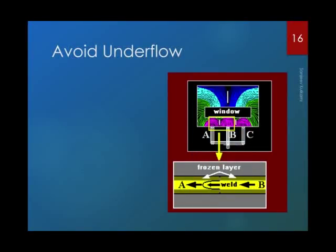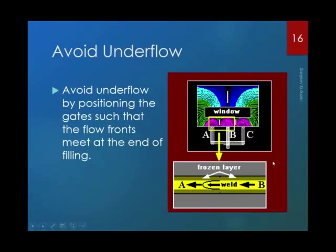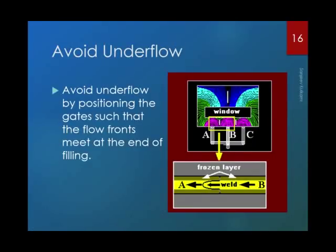Avoid underflow: one tends to provide more gates for large parts. If the mold designer considers gates A, B, and C for a component, and gates A and C are more dominant than B, then on the part surface you will not see any weld line. However, the welding of the melt occurs at the core in a non-straight shape, weakening the complete structure and creating a risk of component failure. In such cases, either block gate B, or at the design stage, do not provide gate B.